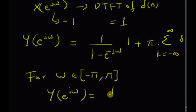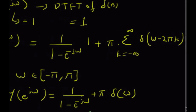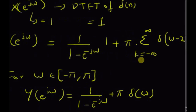For ω in the interval (-π, +π), Y(e^jω) equals 1/(1 - e^(-jω)) plus π times δ(ω), because the summation over all k reduces to just δ(ω) in this interval. So finally, the DTFT of the unit step sequence is Y(e^jω) = 1/(1 - e^(-jω)) + π·δ(ω). Thanks for watching.